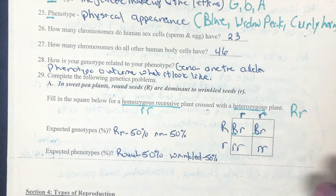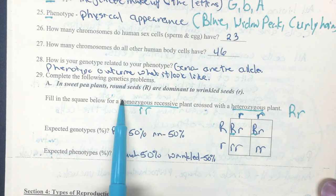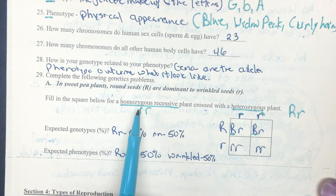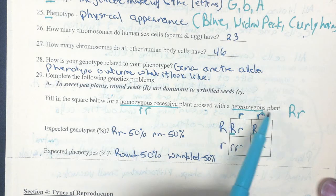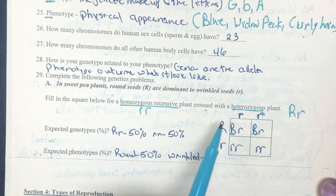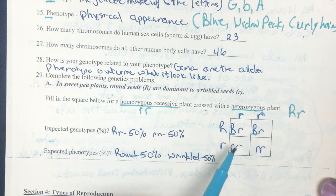You also need to know how to read a Punnett square. Homozygous recessive means homo — same — and recessive means small letter, so it's little r, little r. Heterozygous plants are capital and lowercase. This cross gives a 50-50 result: two that are round seeds and two that are wrinkled seeds.